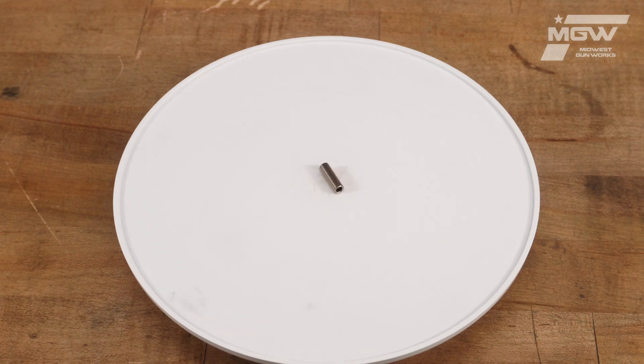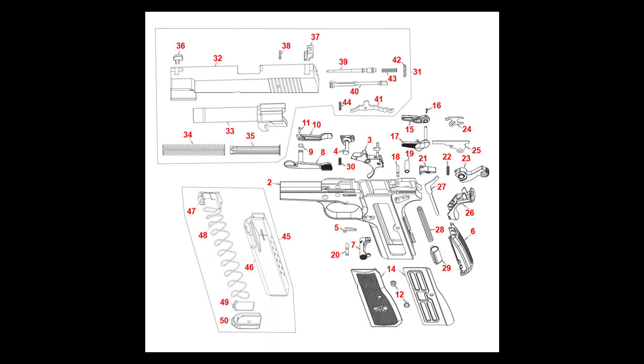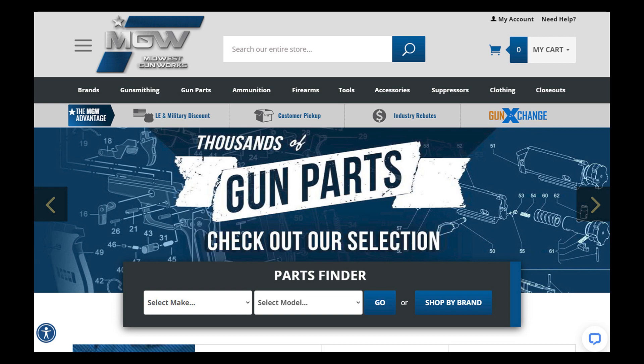You can find this hammer bushing on our FN High-Power parts schematic page under the number 19 or by utilizing its project code in the top search bar of our site.